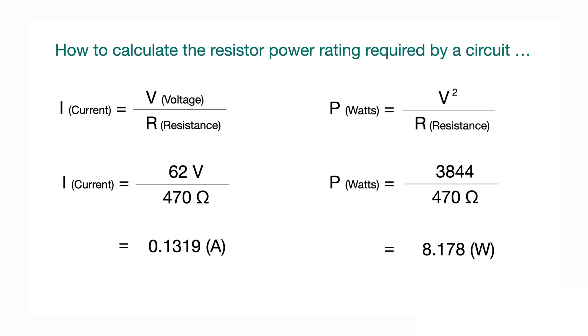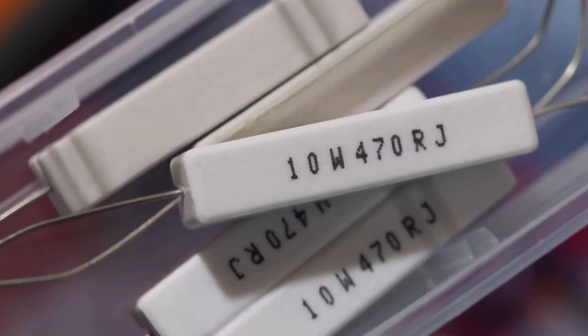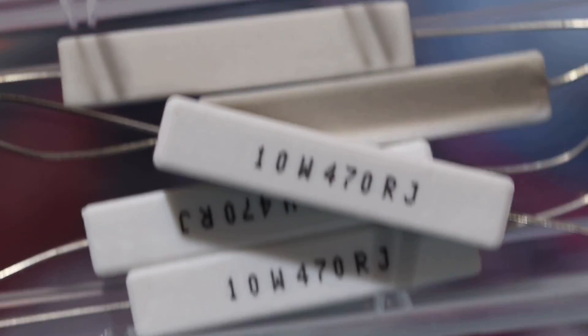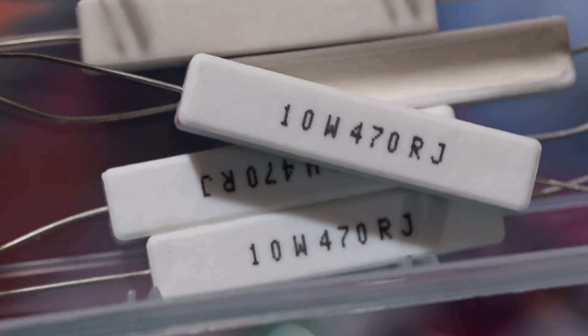Another method you may see is power equals voltage squared divided by resistance, which will yield the same result. And so before even wiring up the circuit, we can determine that a 10 watt resistor would be required in order to handle the power that we've calculated will be produced.